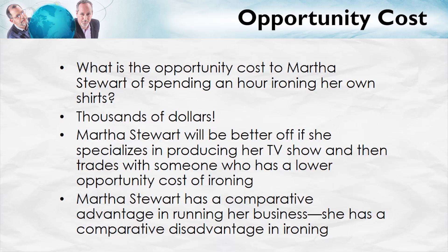Martha Stewart has a comparative advantage in running her business. Or, to put it slightly differently, she has a comparative disadvantage in ironing. The cost to her of ironing is very high precisely because she is so much more productive at other tasks. So Martha Stewart wants to specialize in what she is best at — where she has a comparative advantage. Other people are almost as good as her at ironing clothes, but they're not as good at producing her TV show. That's why Martha Stewart shouldn't iron her own shirts.